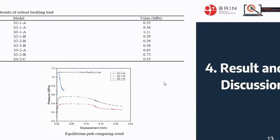Meanwhile, stringer-stiffened cylinder shell S2-1A model has 0.367 MPa lower yield when compared to ring-stiffened cylinder shell and unstiffened cylinder shell. The equilibrium path of the cylindrical shell is shown in the picture on this slide.